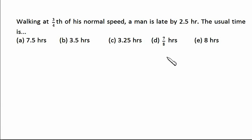Now try this question mentally — no pen and paper. Walking at three-fourths of the normal speed, a man is late by 2.5 hours. What is the usual time? If speed is three-fourths, time will be four-thirds — that is one-third extra. That one-third extra equals 2.5 hours, so one equals 7.5 hours. The usual time is 7.5 hours.